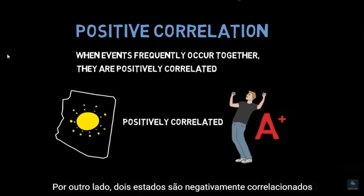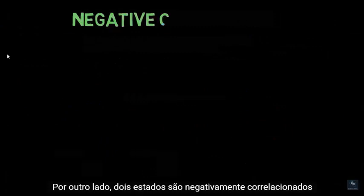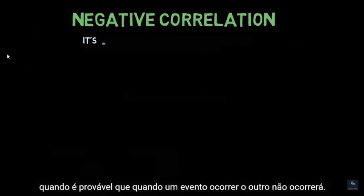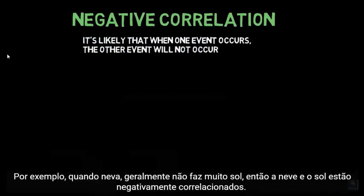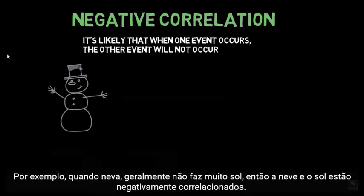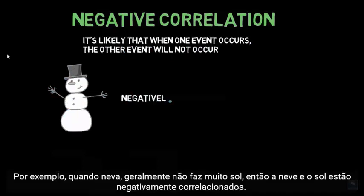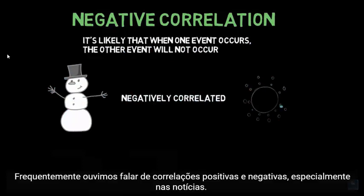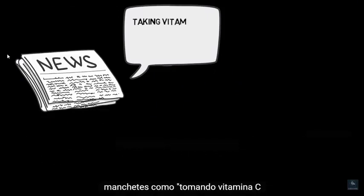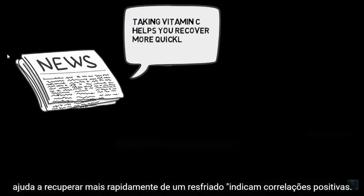On the other hand, two states are negatively correlated when it's likely that when one event occurs, the other will not occur. For instance, when it snows, it's often not very sunny — so snowing and sunniness are negatively correlated. We often hear about positive and negative correlations, especially in the news. Headlines like "taking vitamin C helps you recover more quickly from a cold" indicate positive correlations.